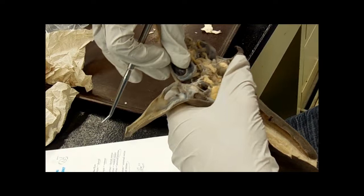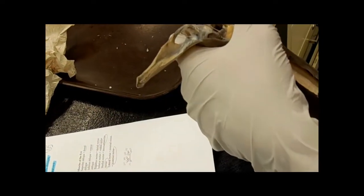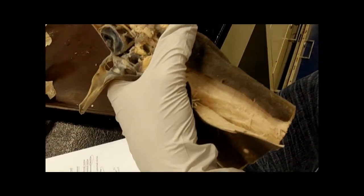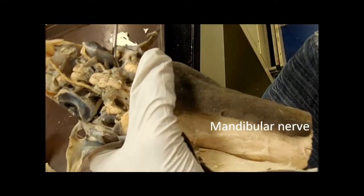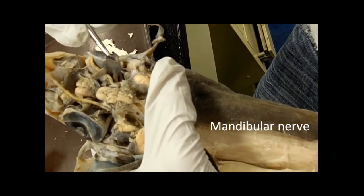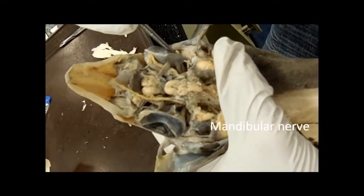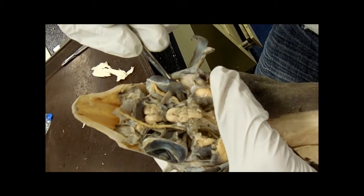Back here, it's closer to the eye. What you have is, I think it's easier to see on this side, is this nerve right here, right behind the eye. This is the mandibular. Don't get it confused with maxillary. This is mandibular.